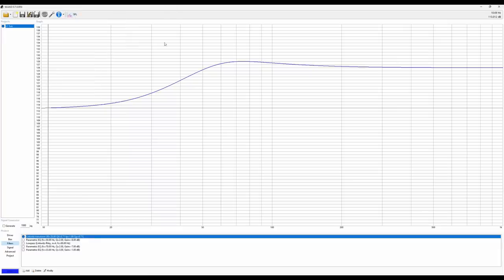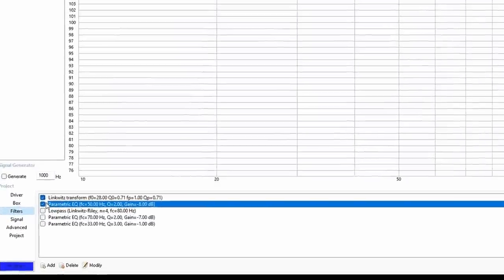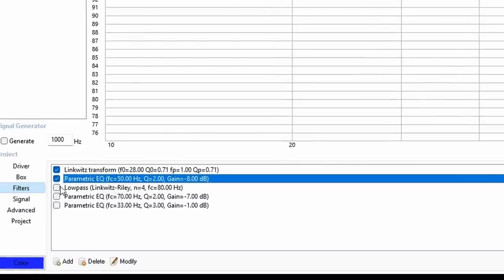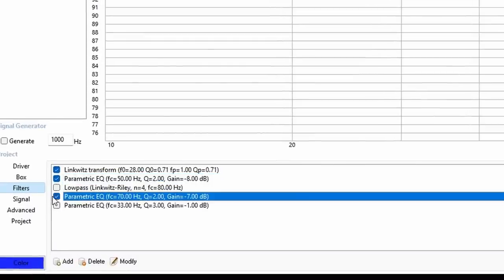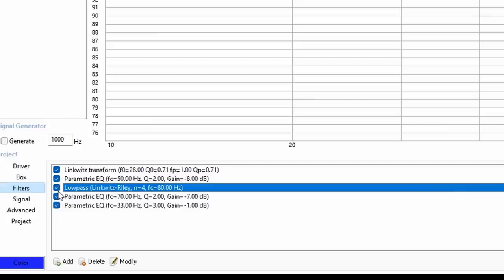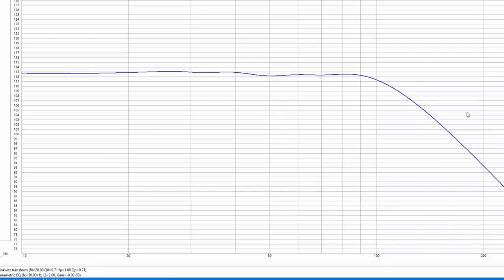All we need to do is start EQing this down. I already figured out some EQs - I added a 50 hertz EQ, a 70 hertz EQ, a 33 hertz EQ, and a crossover point. By doing that we get a very very linear response at 113 decibels, so this subwoofer should have more than enough headroom.